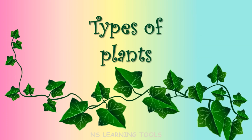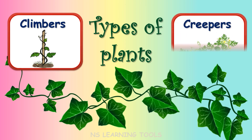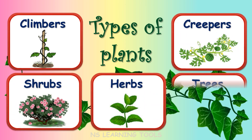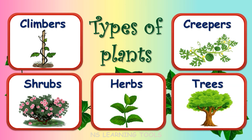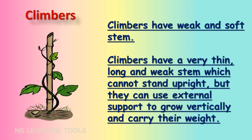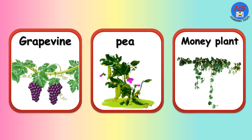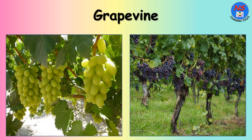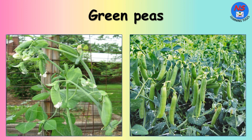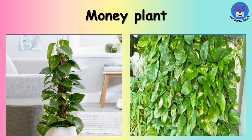The types of plants are climbers, creepers, shrubs, herbs, and trees. Climbers have weak and soft stems — a very thin, long and weak stem which cannot stand upright, but they can use external support to grow vertically and carry their weight. Grapevine, pea, and money plant are examples of climbers. This is how grapevine grows using support. Green peas use external support to grow, and money plant grows over and around the support.